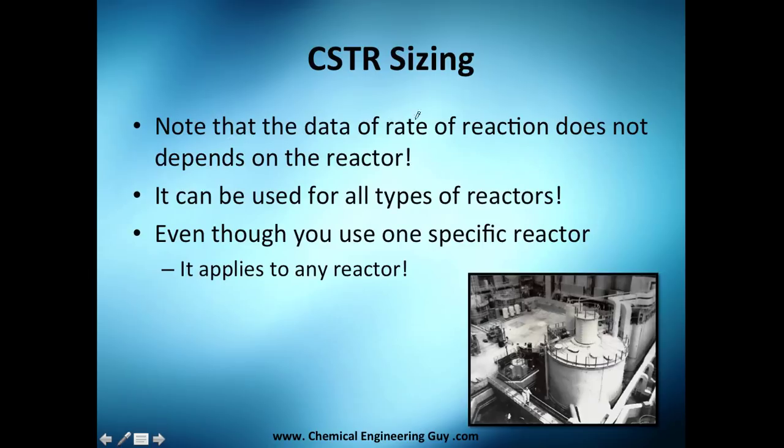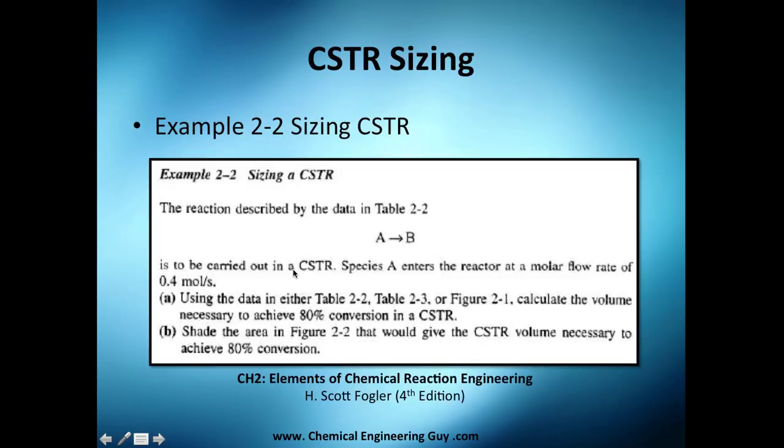The shape of my plot depends on the rate of reaction data. Once again, the rate of reaction does not depend on the reactor. I could choose a PFR, a PBR, a CSTR, anything, and the rate of reaction is dependent on the reaction, not on the reactor. The good thing is that we can actually get one and apply it for any other reactor. It applies for any reactor, and I think we're going to do this example in the other video.